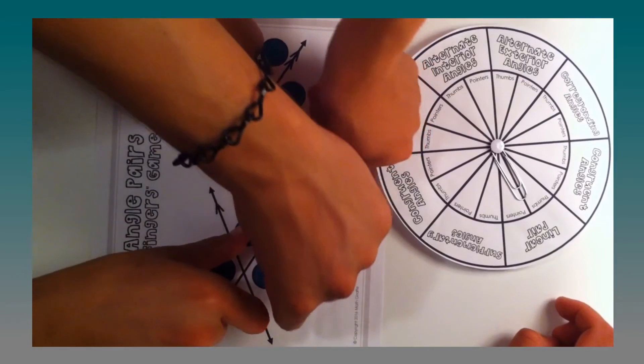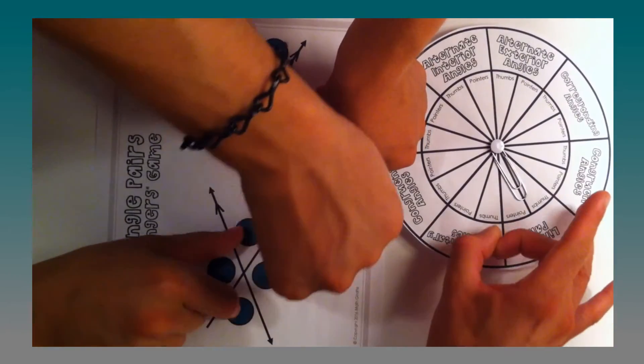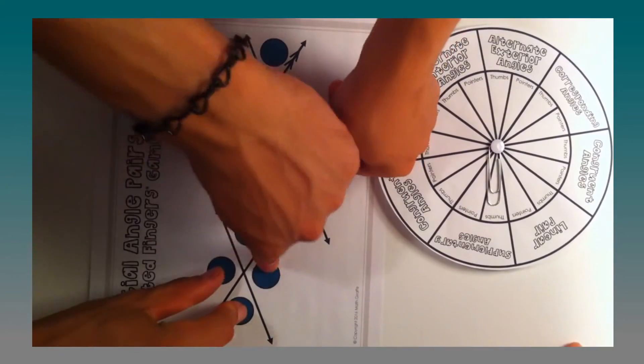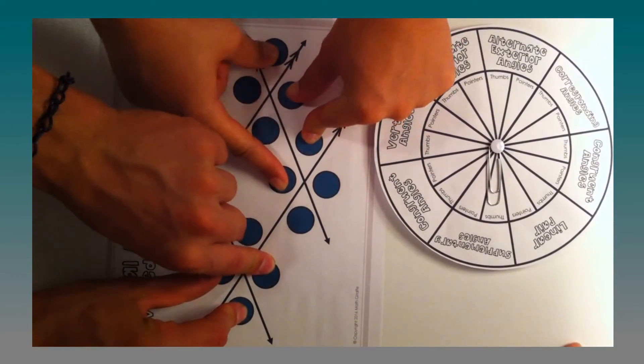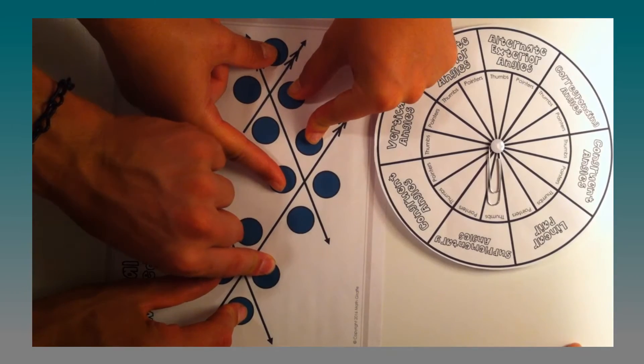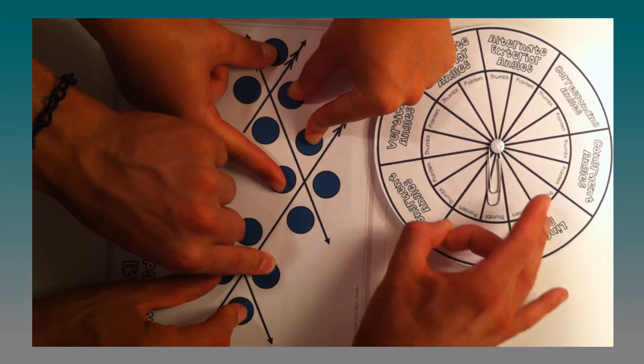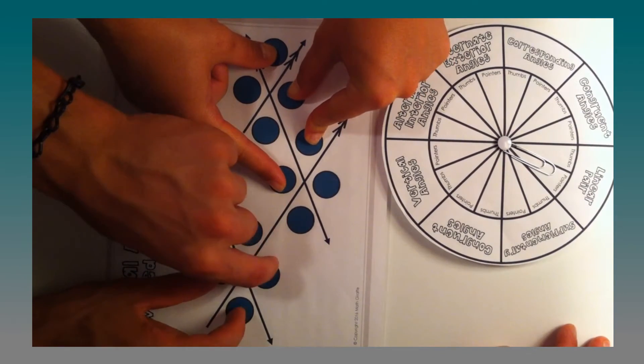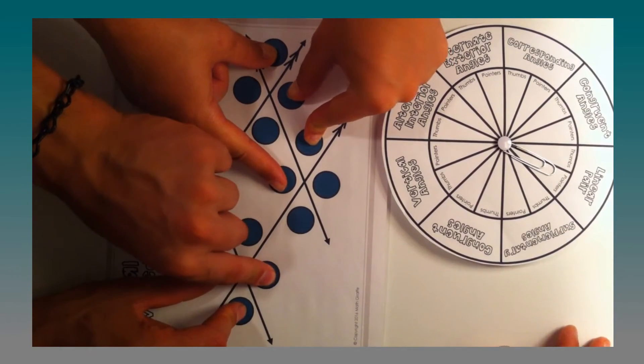And you just keep going and spinning and try not to slip off those dots. Try not to get stuck or not be able to reach over the other person. And each spin you follow what it says. So then this one says thumbs on supplementary. That means any pair of supplementary angles. You have a few options and you can try to start stealing dots that your opponent might need.